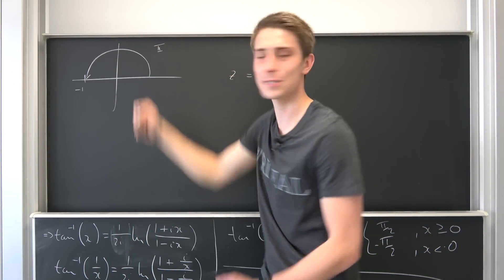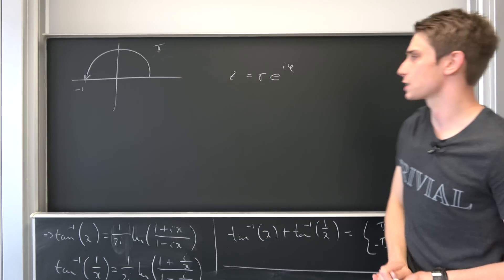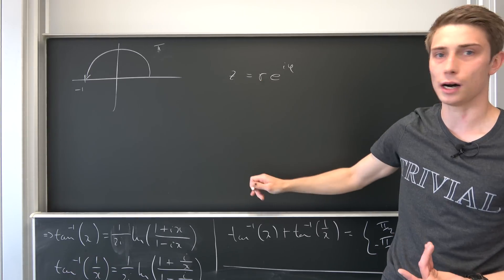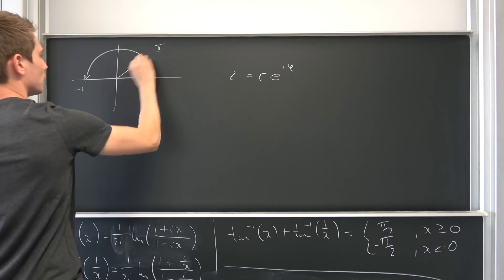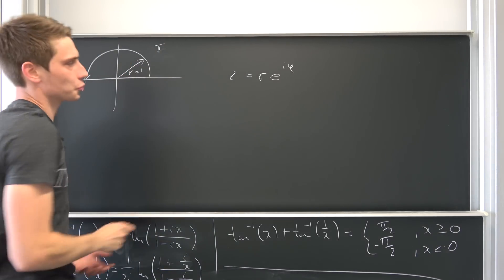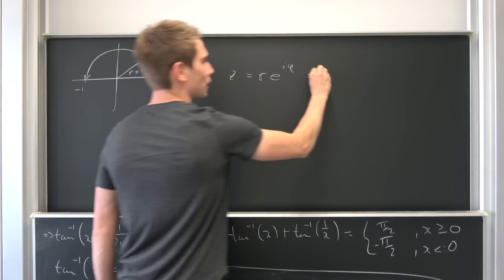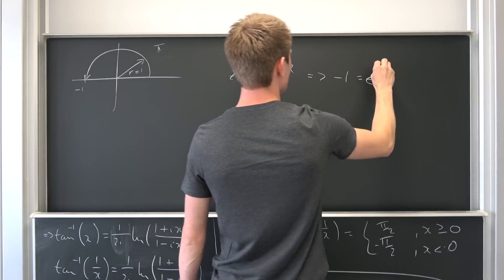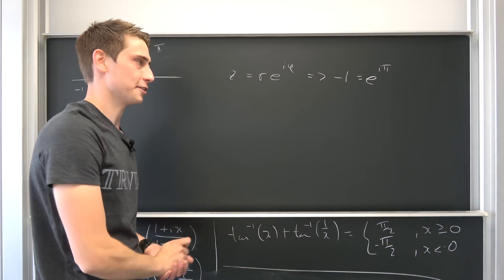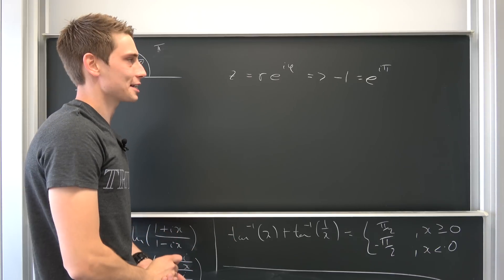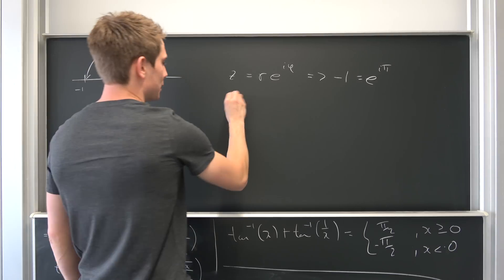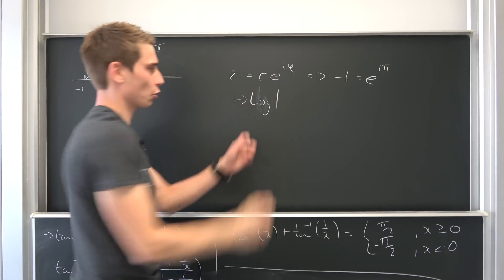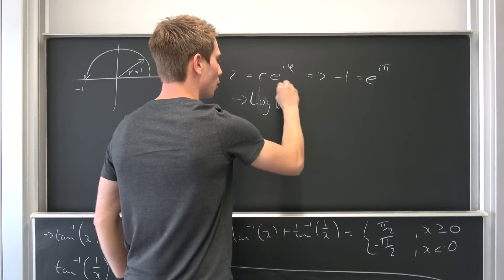So the angle is π in this case. We're on the unit circle, so r = 1. That means negative 1 as a complex number is nothing but e^(iπ). You should know this — Euler's identity. Now we can take the natural log on both sides.